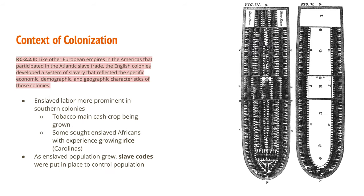Finally, like other European empires in the Americas that participated in the Atlantic slave trade, the English colonies developed a system of slavery reflecting specific economic, demographic, and geographic characteristics. Enslaved labor took hold especially in agricultural colonies — tobacco was the main cash crop in the Chesapeake. In the Carolinas, plantation owners sought enslaved people with experience growing rice in Africa. As enslaved people began to outnumber white settlers, slave codes were enacted to maintain control and keep the enslaved population in bondage.